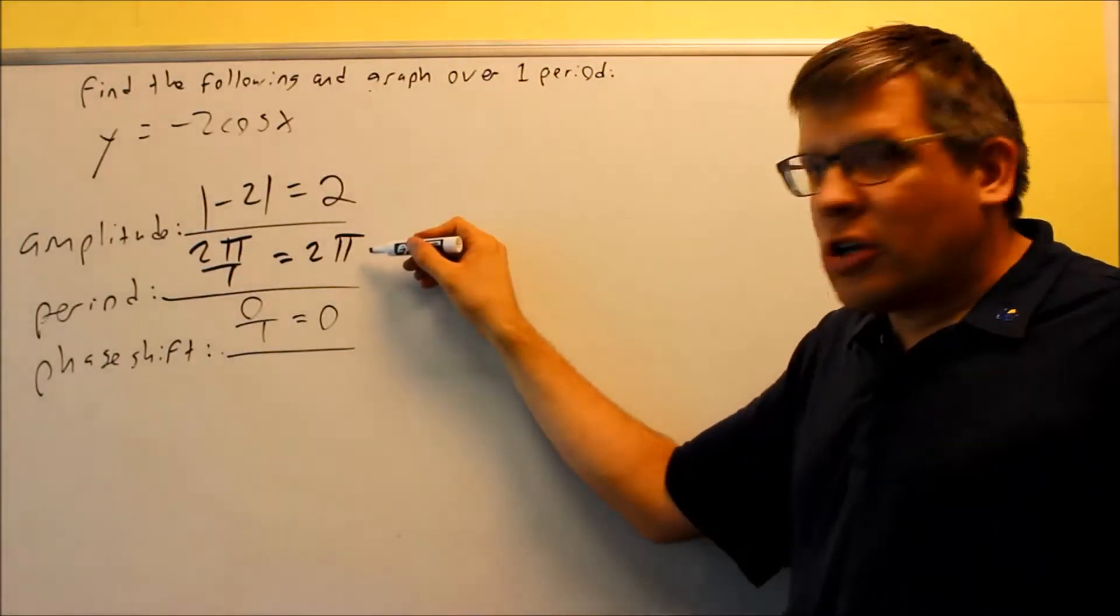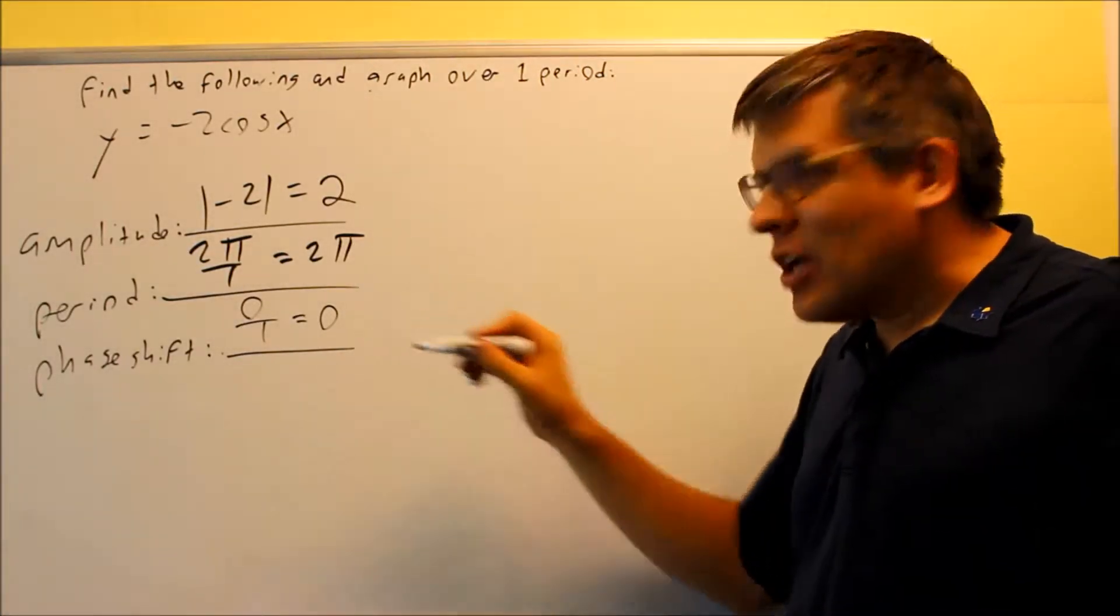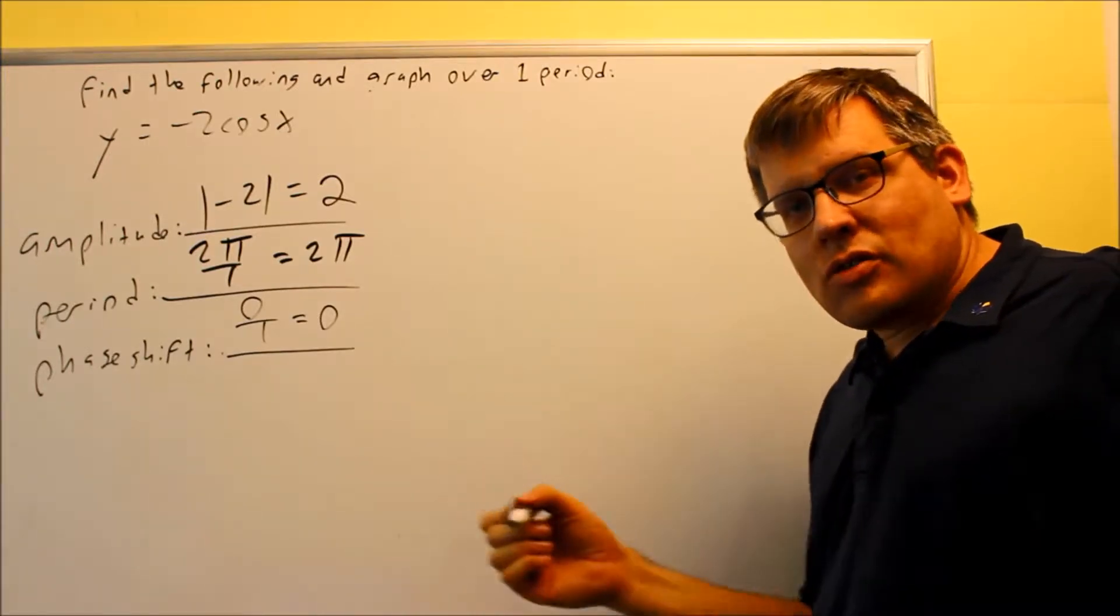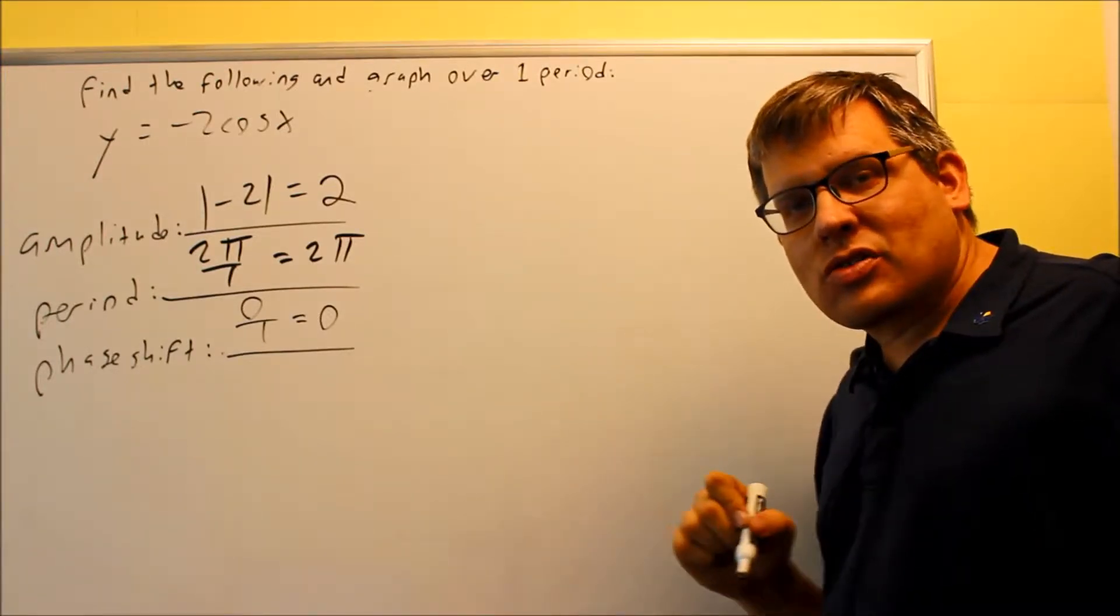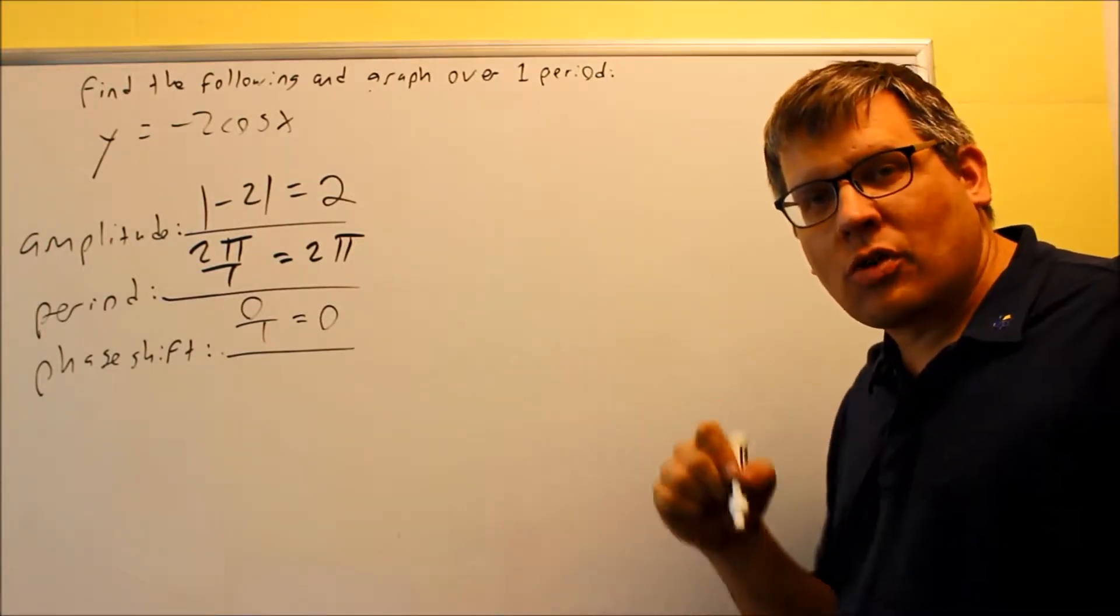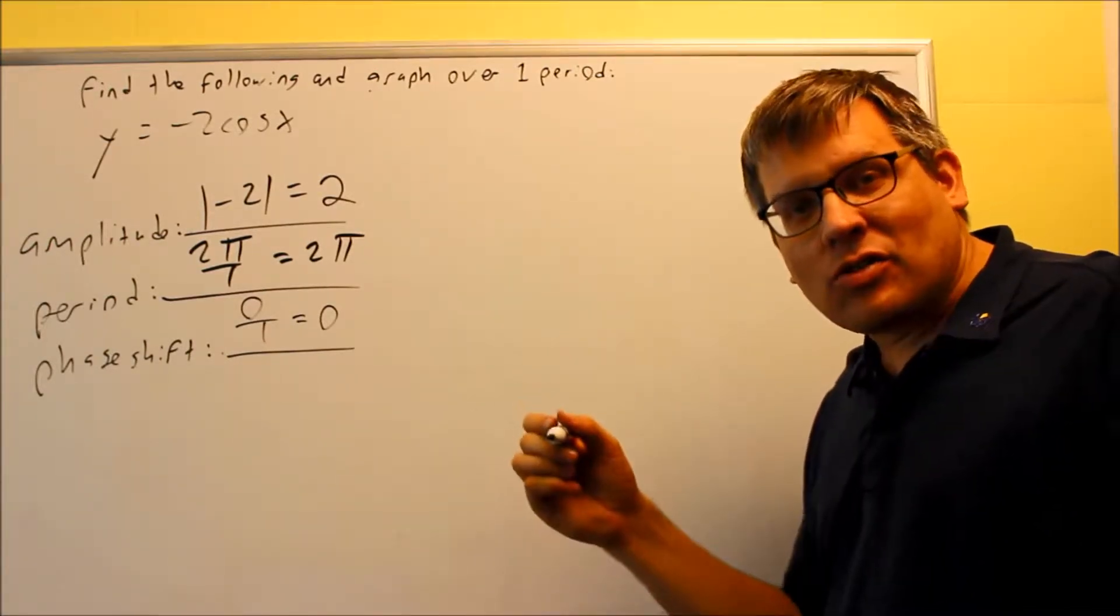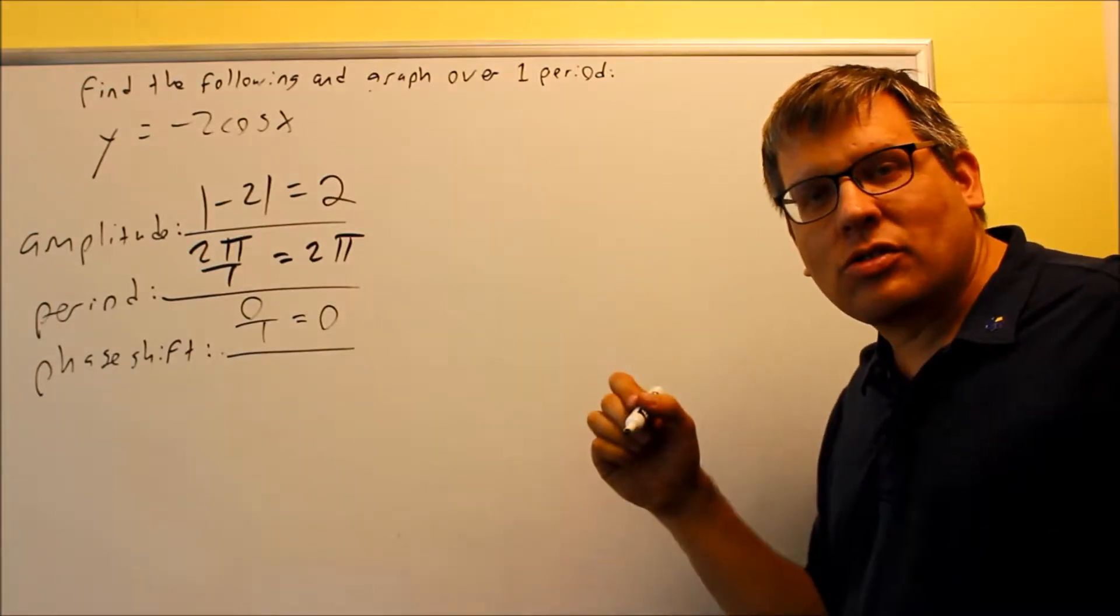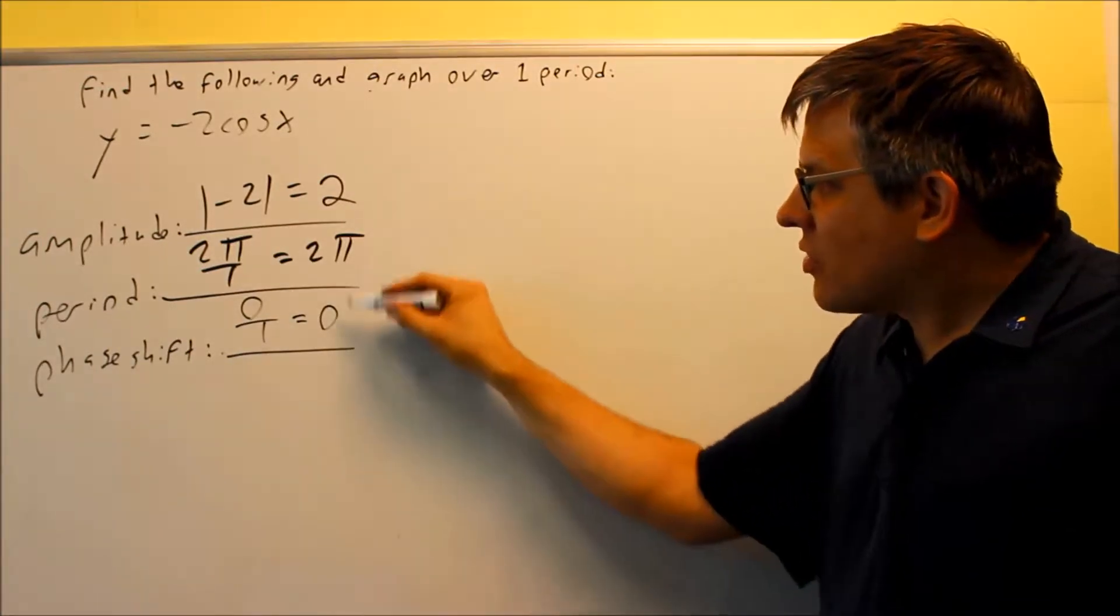Okay, now if my period is 2 pi and my phase shift is 0, that tells us that automatically we should have exactly the same key points that we had originally for our sine graph and cosine graph, the 0, pi over 2, pi, 3 pi over 2, and 2 pi. That tells us that.